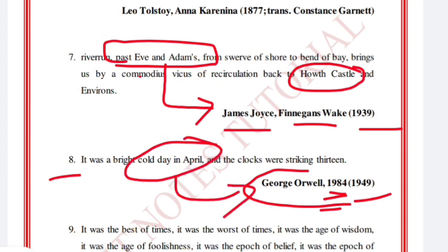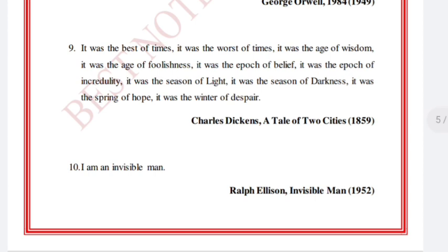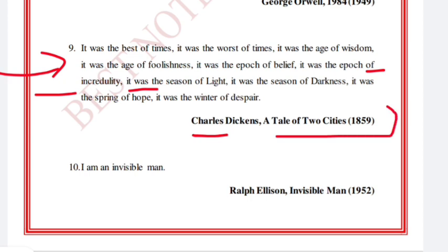'It was the best of times, it was the worst of times, it was the age of wisdom, it was the age of foolishness, it was the epoch of belief, it was the epoch of incredulity, it was the season of light, it was the season of darkness, it was the spring of hope, it was the winter of despair.' Charles Dickens, A Tale of Two Cities, 1859.